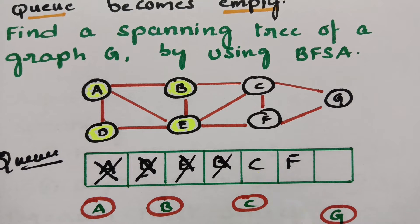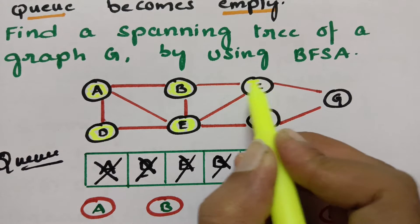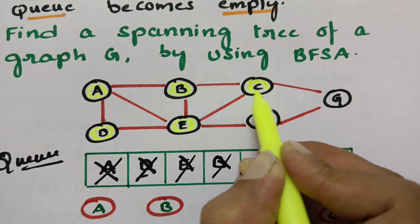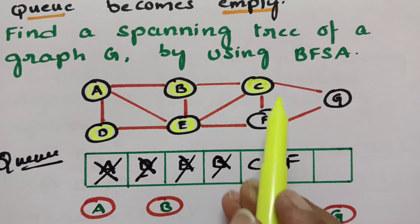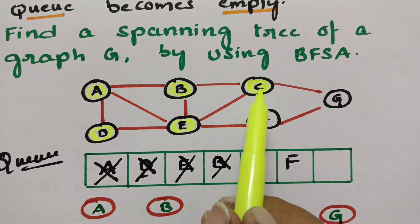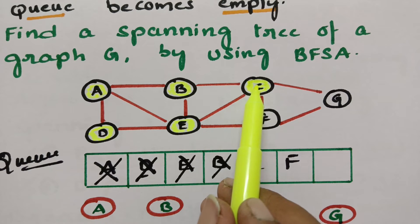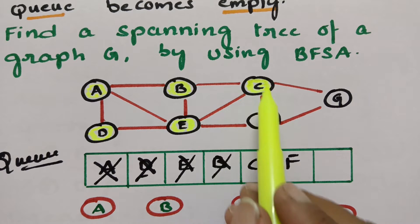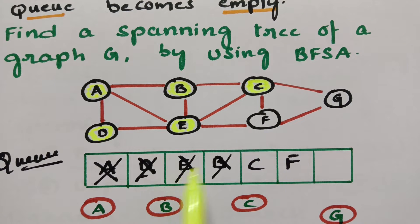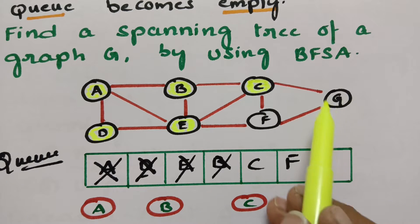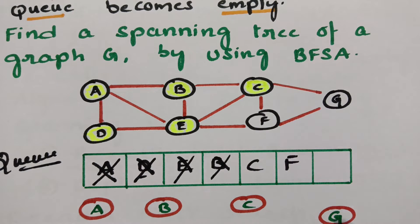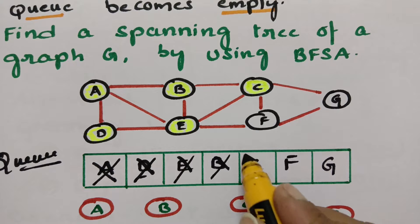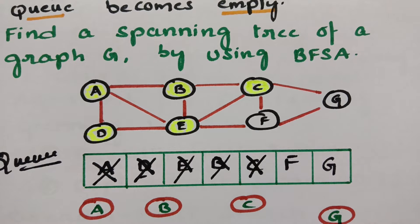The next vertex is C. Now I have to visit C. After visiting, I have to explore — searching the adjacent vertices. B is already posted. E is already posted. F is already posted. What remains? G. So now I have to post G in the queue. Next, delete C from the queue.